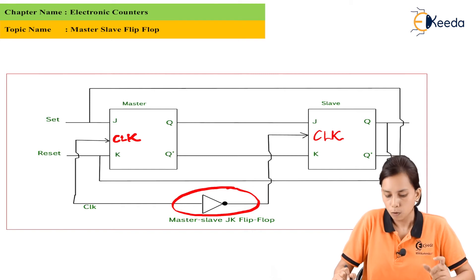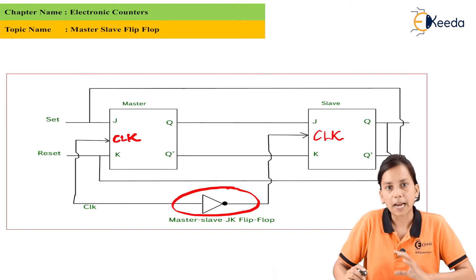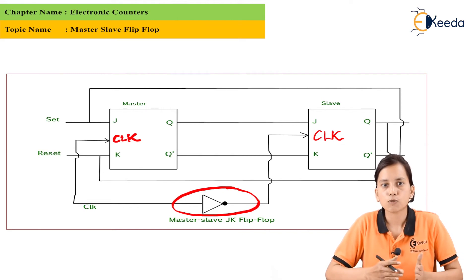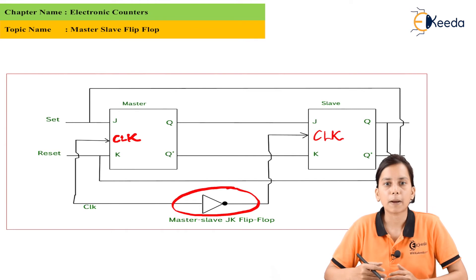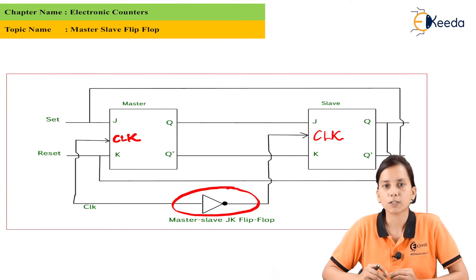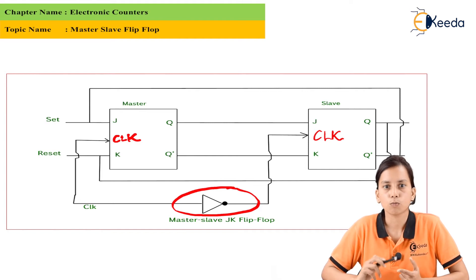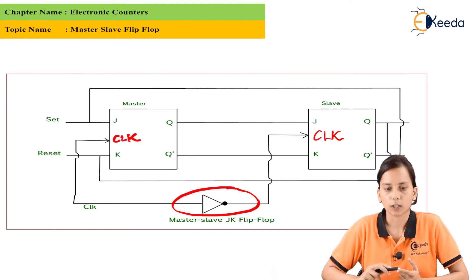The whole operation of the master-slave flip-flop depends on the clock. Stage one and stage two both operate or not depending on the clock — our operation is fully clock-dependent.